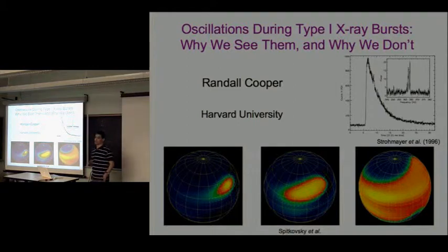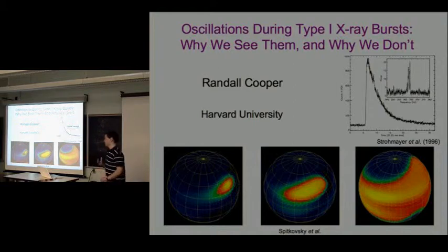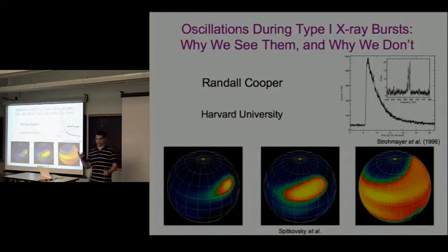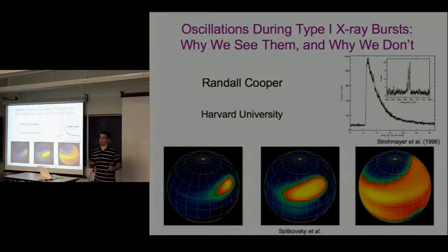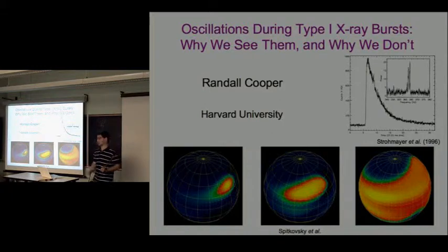That's exciting in a few ways. It's sort of a link in evolution - we think that neutron stars are spun up by accretion. The neutron stars in these systems are very old and have accreted a lot of mass, and this kind of illustrates that it's probably, in fact, true.